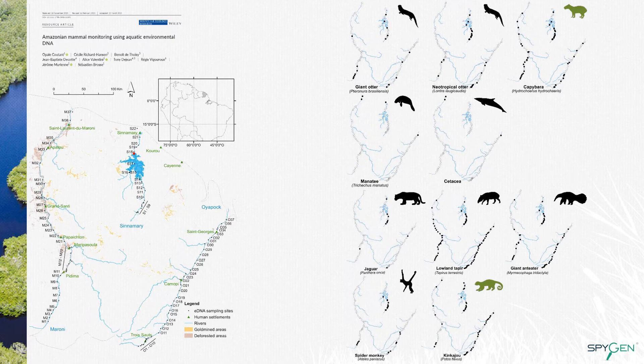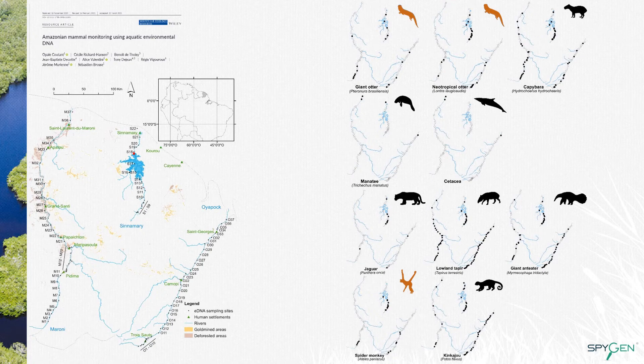Looking at the species distribution, it was also possible to correlate the species detection with human presence and activity. Capybara and kinkajou, two generalist species not hunted by humans, were found spread all over the river samples. Other species impacted by humans — the vulnerable giant otter, neotropical otter, and spider monkey — were found far from human settlements, with only one exception: spider monkey found close to a Camopi village. But this DNA could have come from animals hunted far away and brought back to those villages, since spider monkey is eaten by humans in French Guiana.